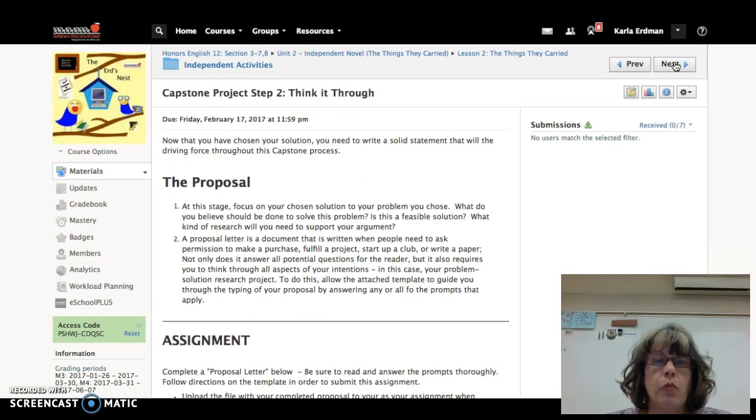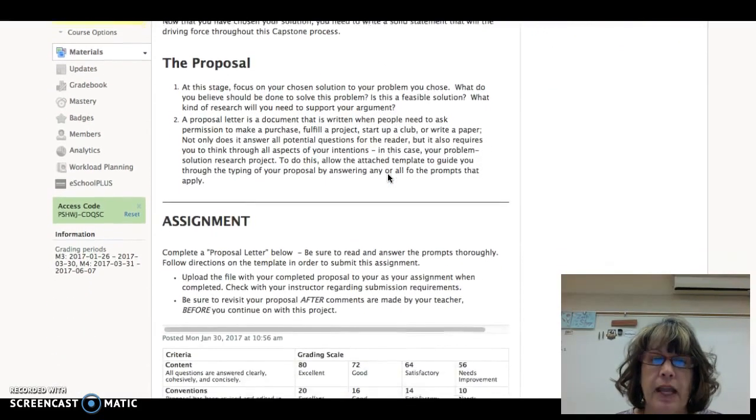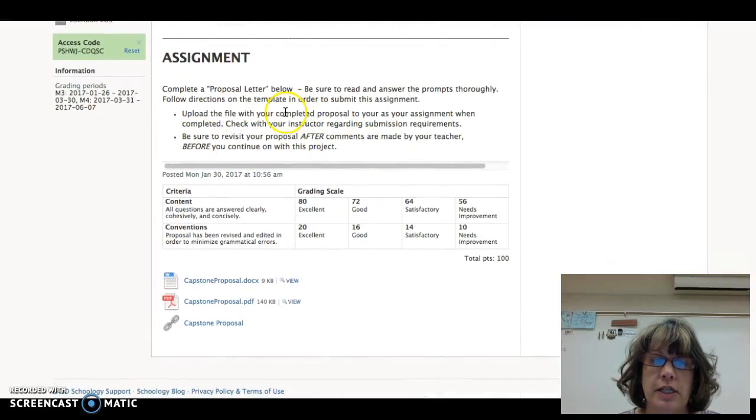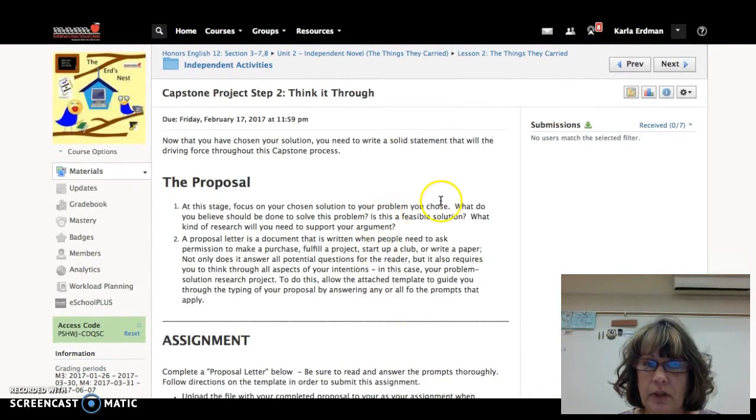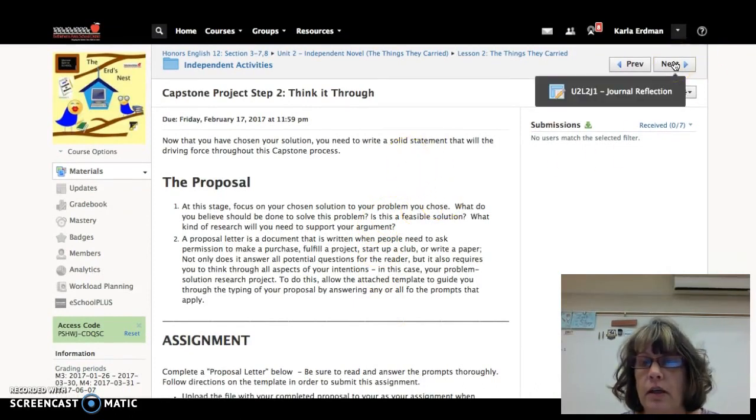One thing that you do have to do in this one is the next step of your capstone, thinking it through. You're actually going to create a proposal letter for your capstone project. So you'll need to go back to the graphic organizer that you completed in unit one and follow the directions here. You do have links to a file that you can submit. Then if you have any questions, obviously come in during fourth block or email me and let me know what the issues are.